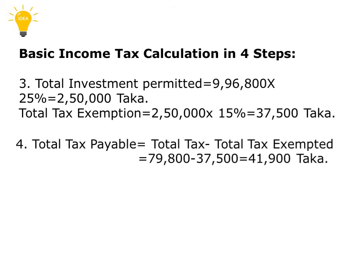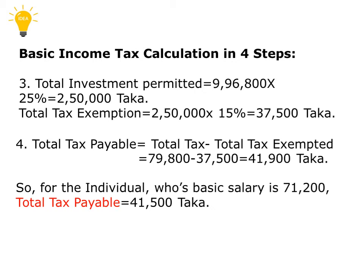Now, the total tax payable — this is the fourth step. Total tax payable equals total tax minus total tax exempted. In our example, 79,800 Taka minus 37,500 Taka comes to 41,900 Taka. So this is the total tax payable for this individual whose basic salary is 71,200 Taka.